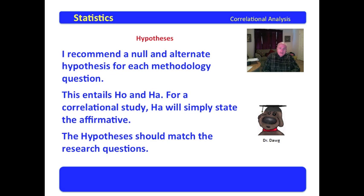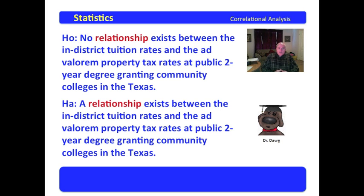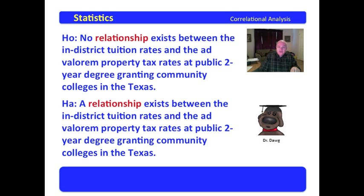The hypotheses should match the research question. The research question asks 'does a relationship exist?' — the null hypothesis says no relationship exists, and the alternate says a relationship exists. The questions flow: descriptive, then methodology; then the methodology question has a null and an alternate hypothesis. Notice the word 'between' — it denotes two things, because we're comparing in-district tuition rates and ad valorem property tax rates. If we were comparing three things, we would say 'between or among.'